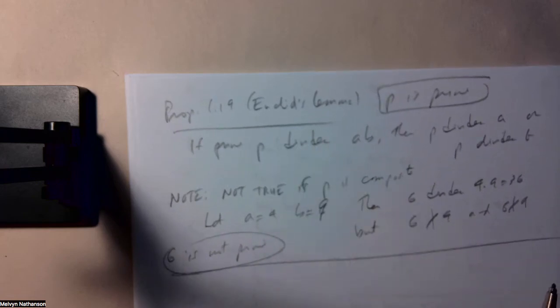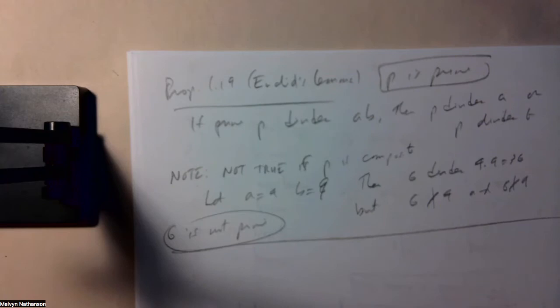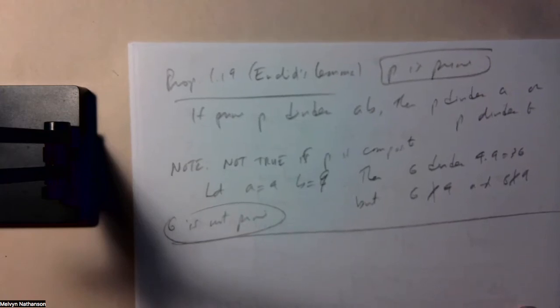So, Euclid's Lemma is true about primes, but it's not always true for other numbers. So, how do we prove Euclid's Lemma?